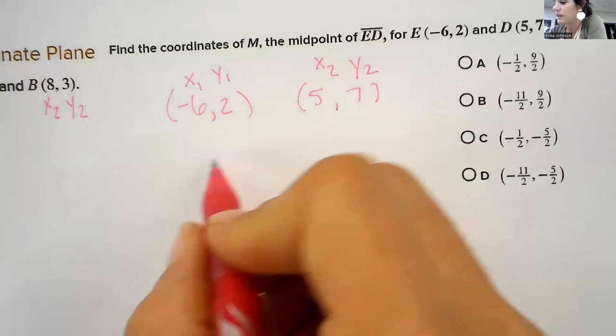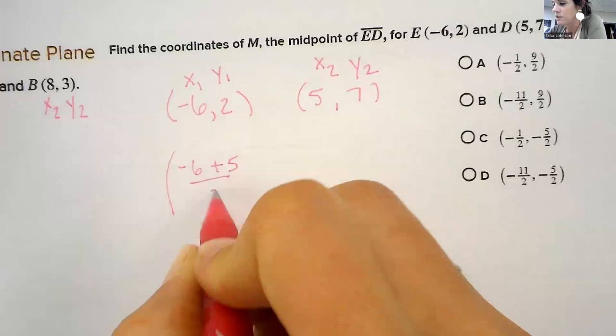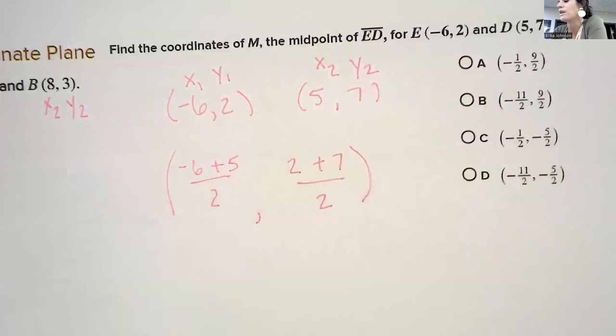And so I'm going to plug into my formula. I'm going to do add the x's. Divide by 2. Add the y's. And divide by 2. We're going to find halfway in between them. We're finding the midpoint.